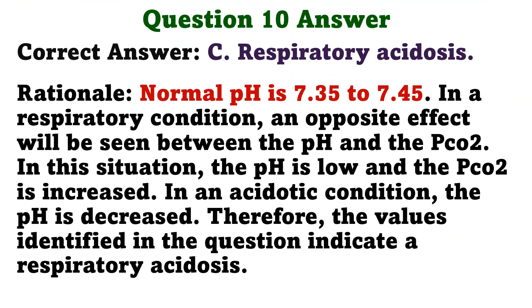The correct answer is C: Respiratory acidosis. Rationale: Normal pH is 7.35 to 7.45. In a respiratory condition, an opposite effect will be seen between the pH and the PCO2. In this situation, the pH is low and the PCO2 is increased. In an acidotic condition, the pH is decreased. Therefore, the values identified in the question indicate respiratory acidosis.